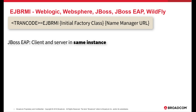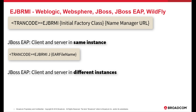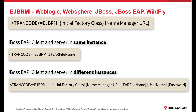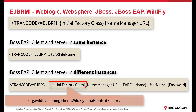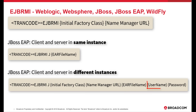For JBoss EAP, when client and server are in the same instance, the format is one form; when client and server are in different instances, the format is another. Here, J stands for connecting to JBoss EAP. EAR file name is for the name of the server EAR file. Initial factory class is for org.wildfly.naming.client.wildflyInitialContextFactory. Name manager URL is for remote-plus-HTTP colon double-slash hostname colon port. Username is the JBoss EAP username, and password is the JBoss EAP password.